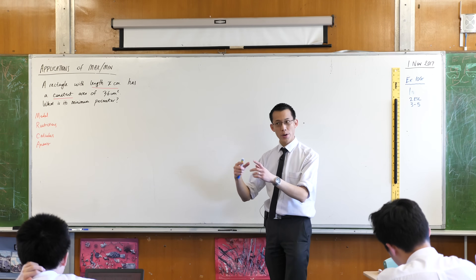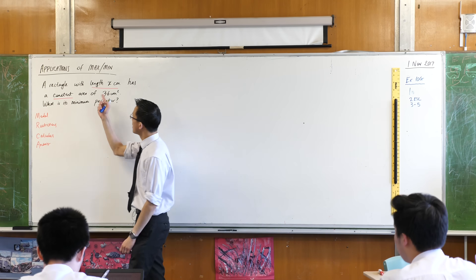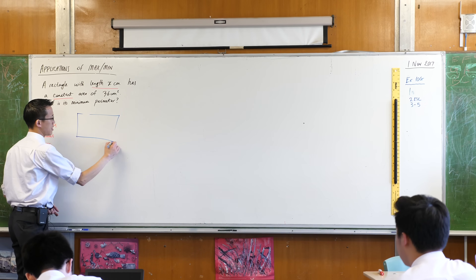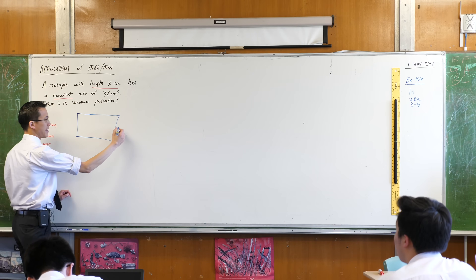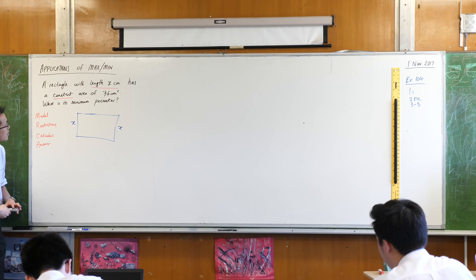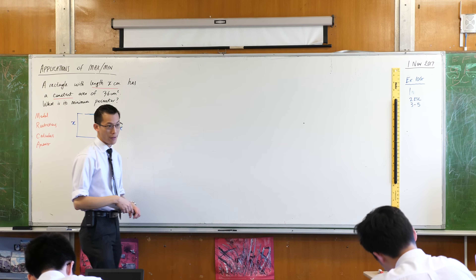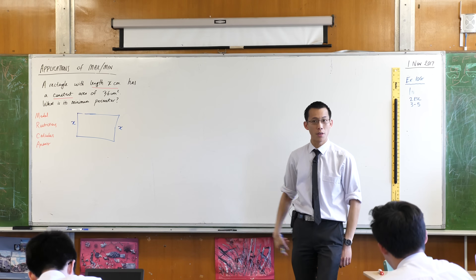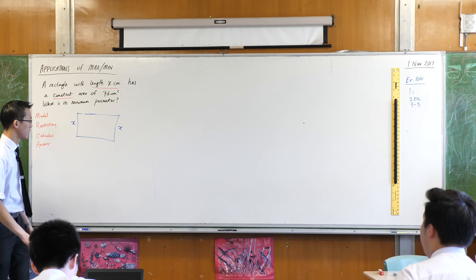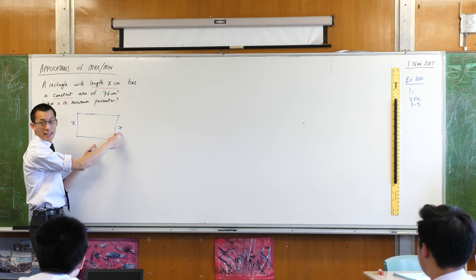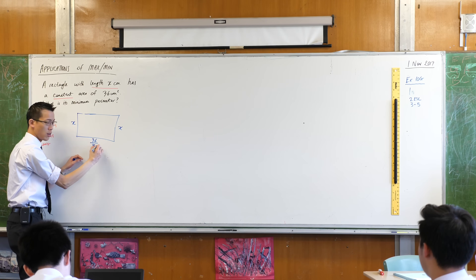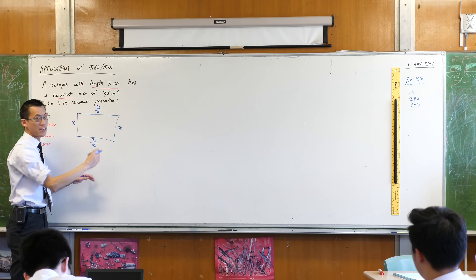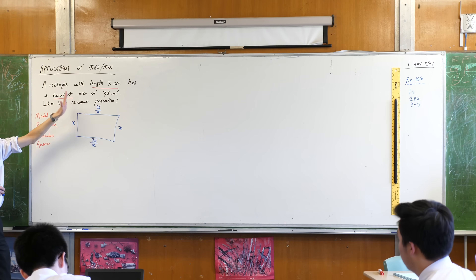Let's have a go. To create the model, I want to use all the information provided. There's a rectangle with length x, so the first thing I'm going to do is draw it. If the rectangle has length x and an area of 36 square centimeters, then the area equals length times width, so the width must be 36 over x. Multiplying x by 36/x gives 36 — correct. So I've got the dimensions of my rectangle, and this is part of my model as I'm building it.